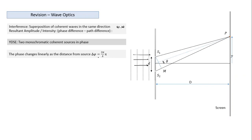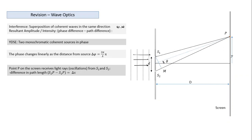Taking a general point P on the screen from sources S1 and S2: point P receives oscillations from both S1 and S2. Even though they are in phase at the source, by the time waves reach P, if there is a path difference, there will be a corresponding phase difference. The path difference is ΔX = S2P − S1P, and the phase difference is Δφ = (2π/λ) × ΔX. We'll use φ to denote phase difference consistently.